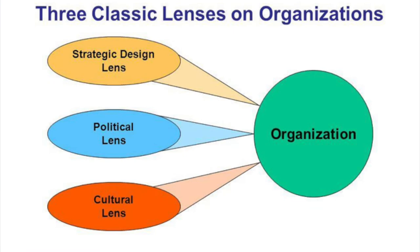We've covered the strategic design lens and the political lens. They help us understand a lot about the structures and roles in organizations, as well as the stakeholders, interests, conflicts, and negotiations that abound in organizations. Taken together, they might seem to offer a complete portrait of life in the workplace.